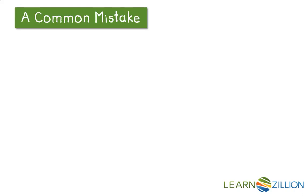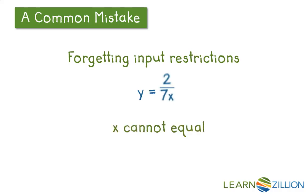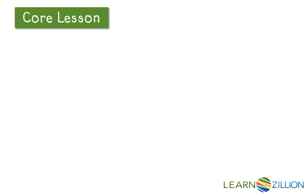What common mistakes should you be looking out for? One thing that you may forget is that there are going to be input restrictions. Like we saw on that graph, these functions have limits in their domain. For instance, with the function y equals 2 over 7x, x cannot equal 0, because then the fraction would be 2 over 0, which is not within a range that we can graph.